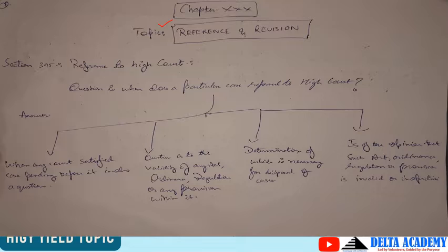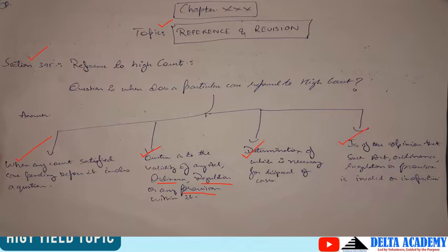Section 395 baat karta hai Reference to High Court — yani ki when does a particular case get referred to the High Court? The answer is: when any court is satisfied that the case pending before it involves a question as to the validity of an Act, Ordinance, Regulation, or any provision within it, the determination of which is necessary for the disposal of the case, and the court is of the opinion that such Act, Ordinance, Regulation or provision is invalid or inoperative.